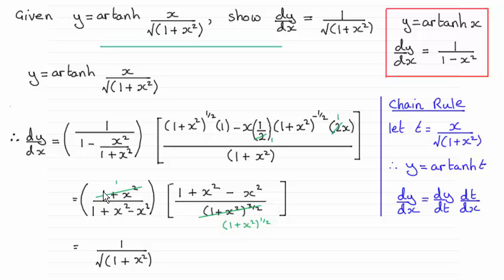And you can see then that I've cancelled across here; I've cancelled top and bottom by 1 plus x squared. That leaves me with 1 plus x squared to the power half down below. And so cleaning this up just leaves me with the result that we had to show: 1 over the root of 1 plus x squared. Okay?